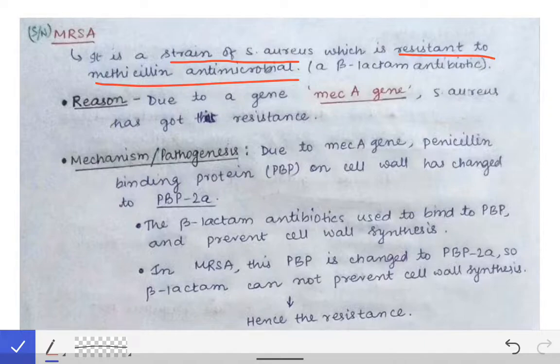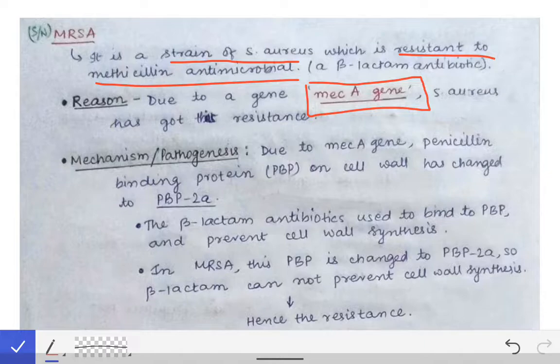What is the reason behind MRSA generation? The reason is the MEC-A gene. This MEC-A gene, which Staphylococcus aureus has acquired, is responsible for this MRSA strain.